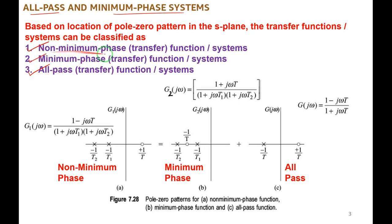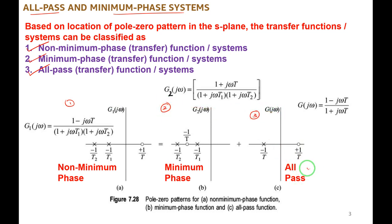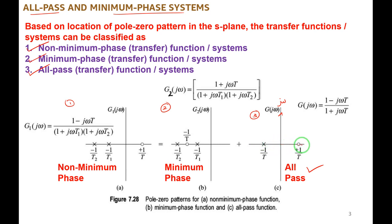Let me start from figure three — all-pass systems. In all-pass systems, the poles and zeros are anti-symmetric about the imaginary axis. Anti-symmetric means if a pole is located at minus one by T on the left half of the s-plane, the corresponding zero is located at plus one by T on the right half — the same distance from the imaginary axis. So all-pass systems are those in which poles and zeros are anti-symmetric about the imaginary axis.